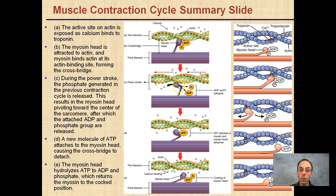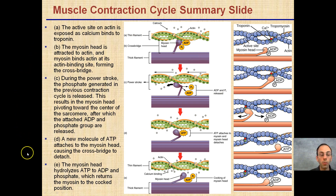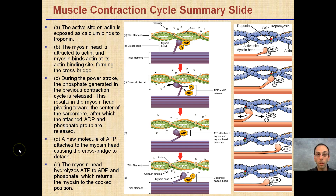To summarize the five steps: calcium comes in, the binding site is exposed, the myosin head moves over in the power stroke, it detaches, and gets ready to bind to another site. This diagram provides a full summary of the five steps explaining the sliding filament theory. Thank you.